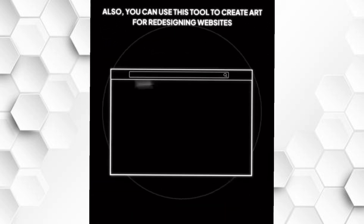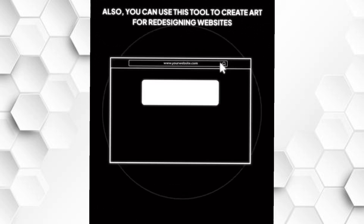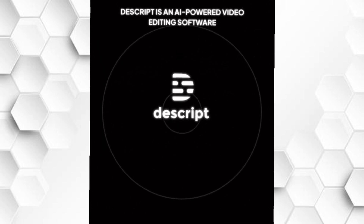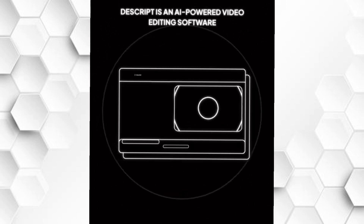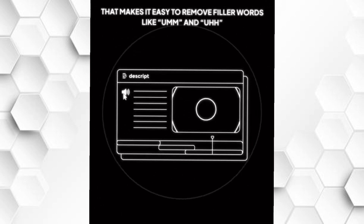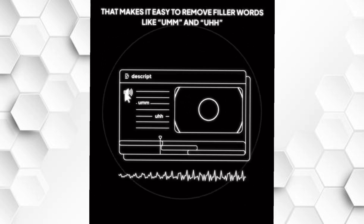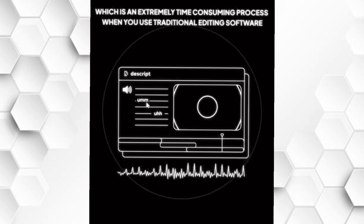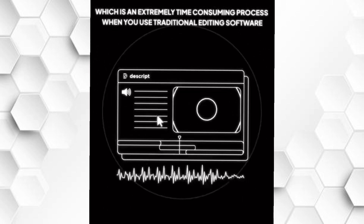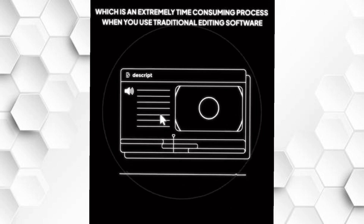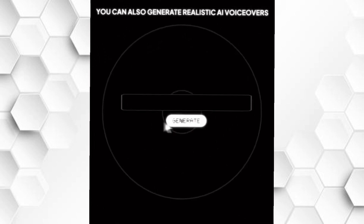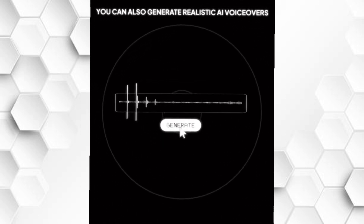Also, you can use this tool to create art for redesigning your website. Descript is an AI-powered video editing software that makes it easy to remove filler words like 'um' and 'uh', which is an extremely time-consuming process when you use traditional editing software. You can also use this tool to generate realistic AI voiceovers.